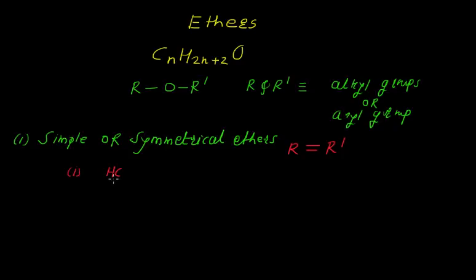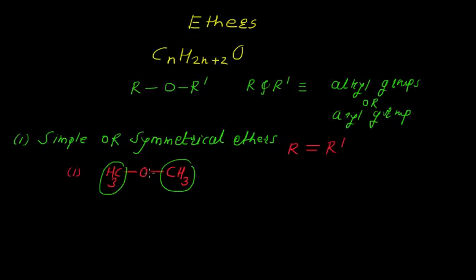An example of a symmetrical ether is CH3-O-CH3. Here you can see that both groups are the same — the CH3 group is attached to the oxygen atom. The name of this compound is dimethyl ether.